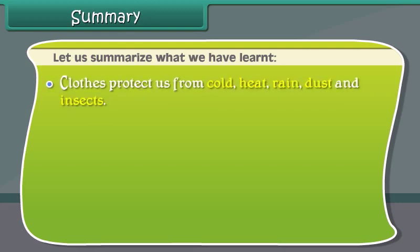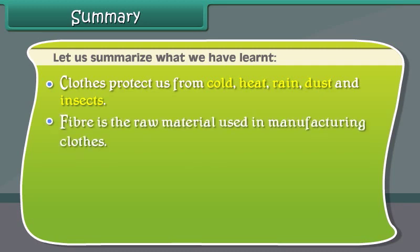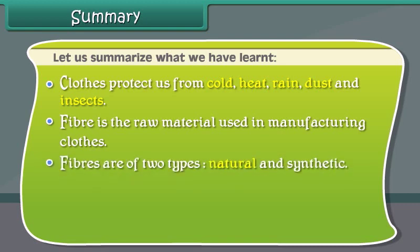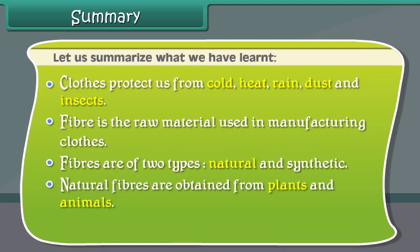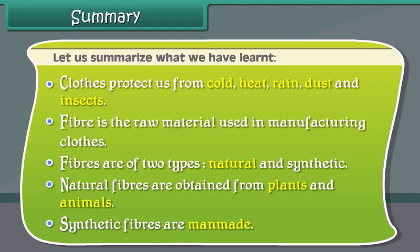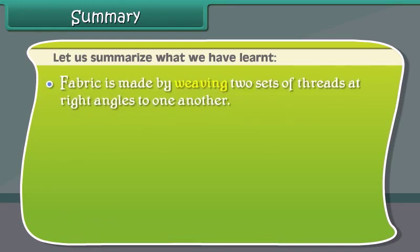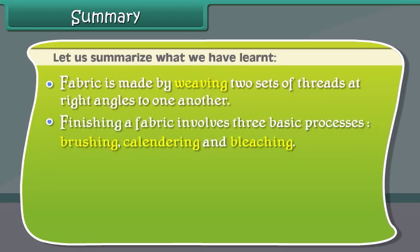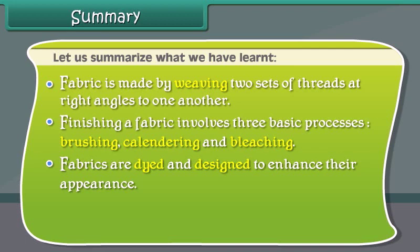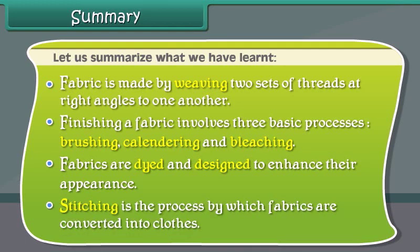Let us summarize what we have learned. Clothes protect us from cold, heat, rain, dust, and insects. Fiber is the raw material used in manufacturing clothes. Fibers are of two types: natural and synthetic. Natural fibers are obtained from plants and animals, while synthetic fibers are man-made. Fabric is made by weaving two sets of threads at right angles to one another. Finishing involves brushing, calendaring, and bleaching. Fabrics are dyed and designed to enhance their appearance. Stitching is the process by which fabrics are converted into clothes.